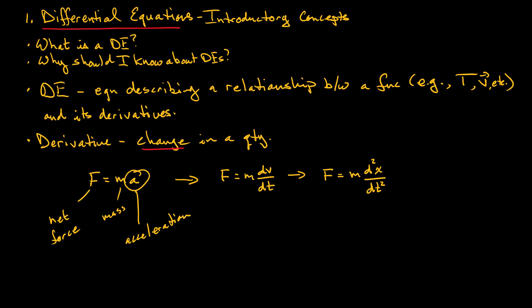We can extract another differential equation from Newton's second law. Since the velocity is the time rate of change of the position vector, Newton's second law can be written as F is equal to the mass times the second derivative of the position x with respect to time.